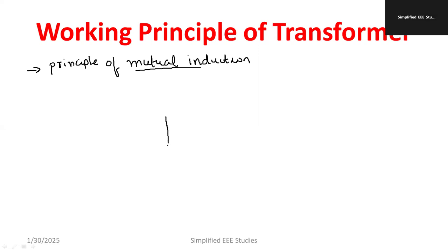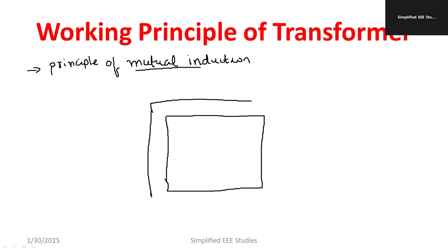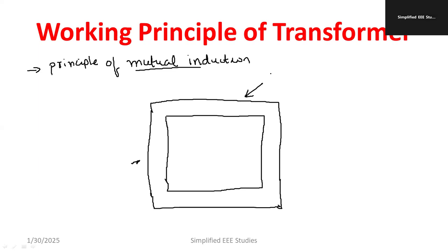The transformer comprises two important components. One is known as the transformer core, which is made up of silicon steel. Silicon steel is used to minimize hysteresis loss — it has a low value of hysteresis and the flux variation will be very less. The core is also laminated, like sliced pieces, to minimize eddy current loss. Those losses I will discuss later on.